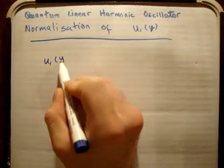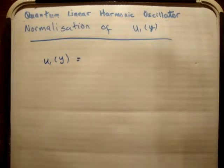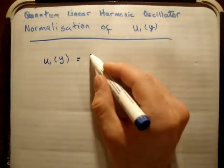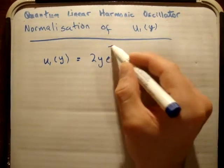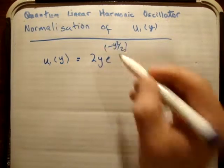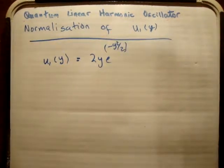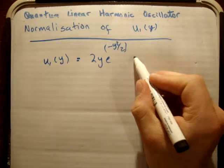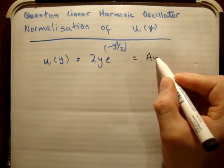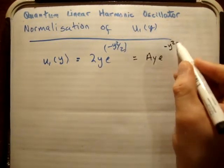So the second wave function is actually u₁ of y, and we found out the unnormalized wave function for u₁(y) was equal to 2y times e to the minus y squared over 2. That's our unnormalized wave function. So because we're normalizing this, we can just say that we'll say A times y times e to the minus y squared over 2.